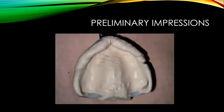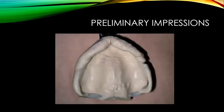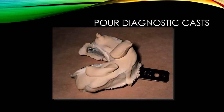The first step when making a complete denture is always taking a preliminary impression. You can use different impression materials, choosing the one suitable for the condition. You need an impression tray and impression material to record the primary or preliminary impression. When done, pour the impression with dental stone to make a diagnostic cast from that impression.